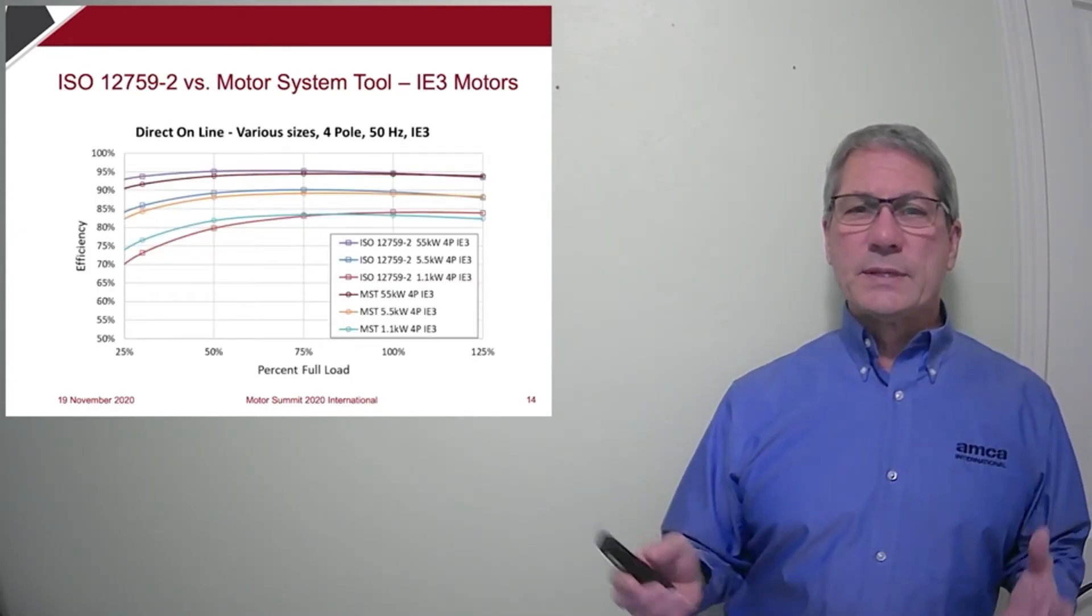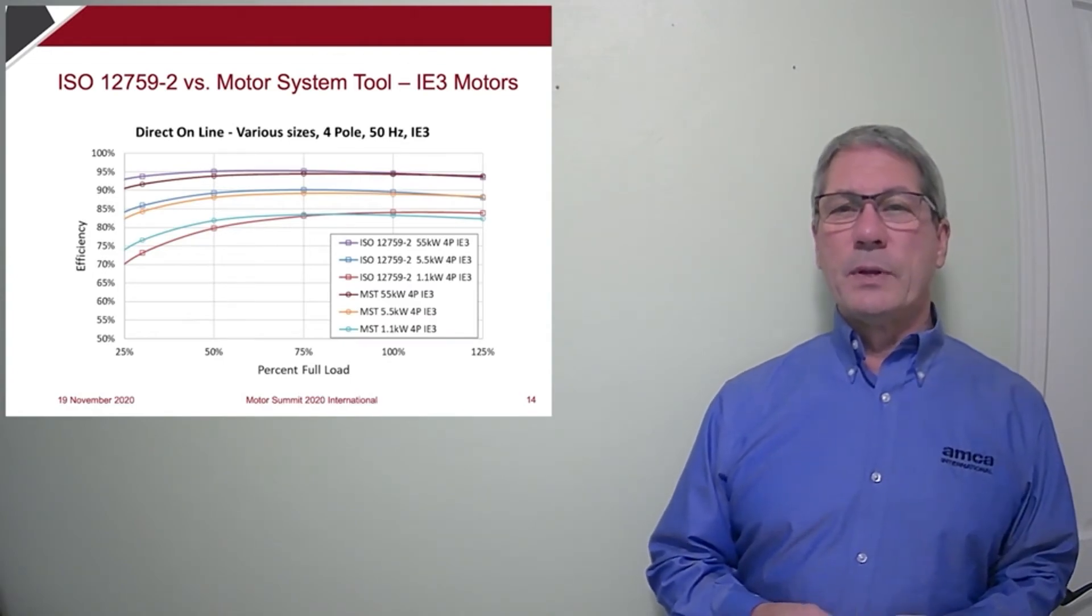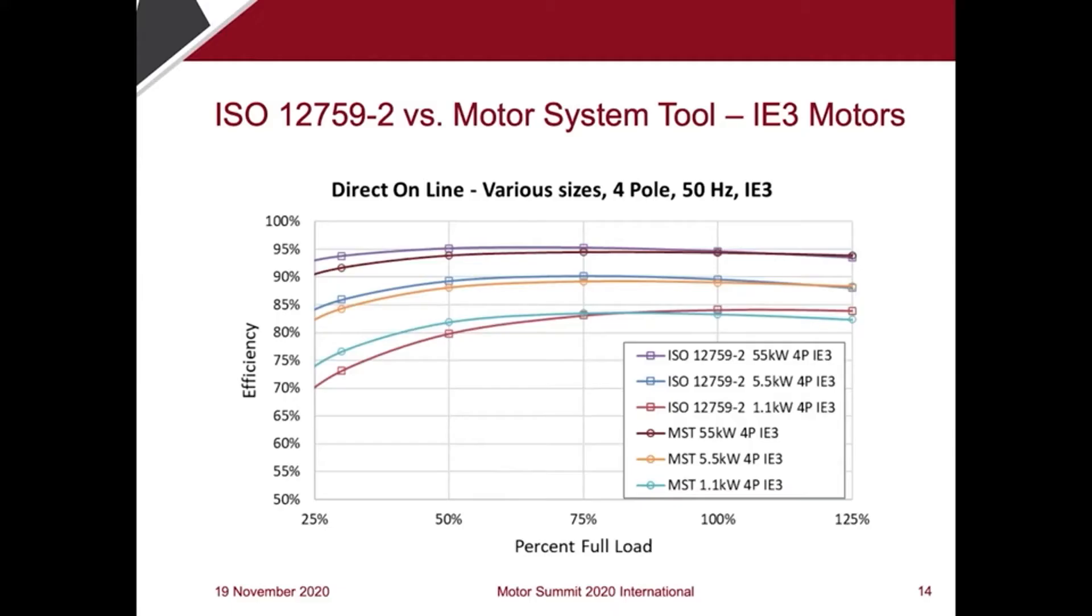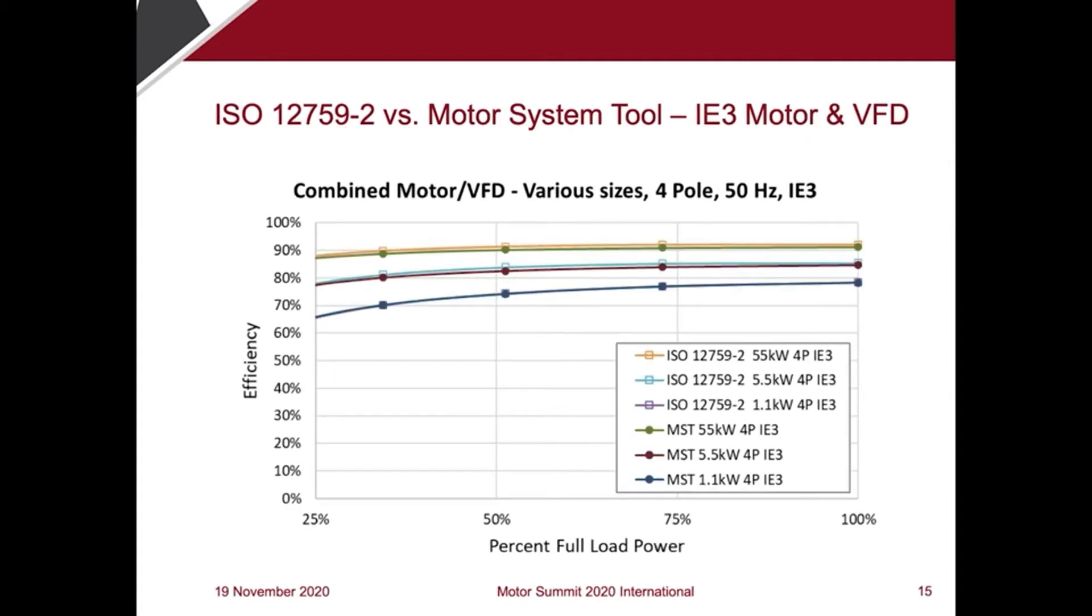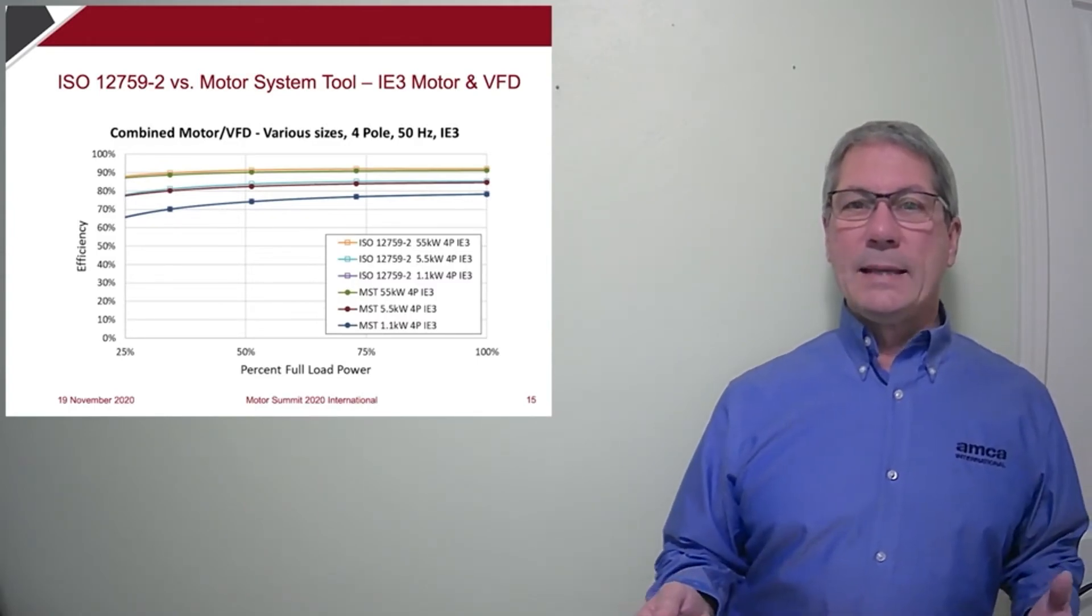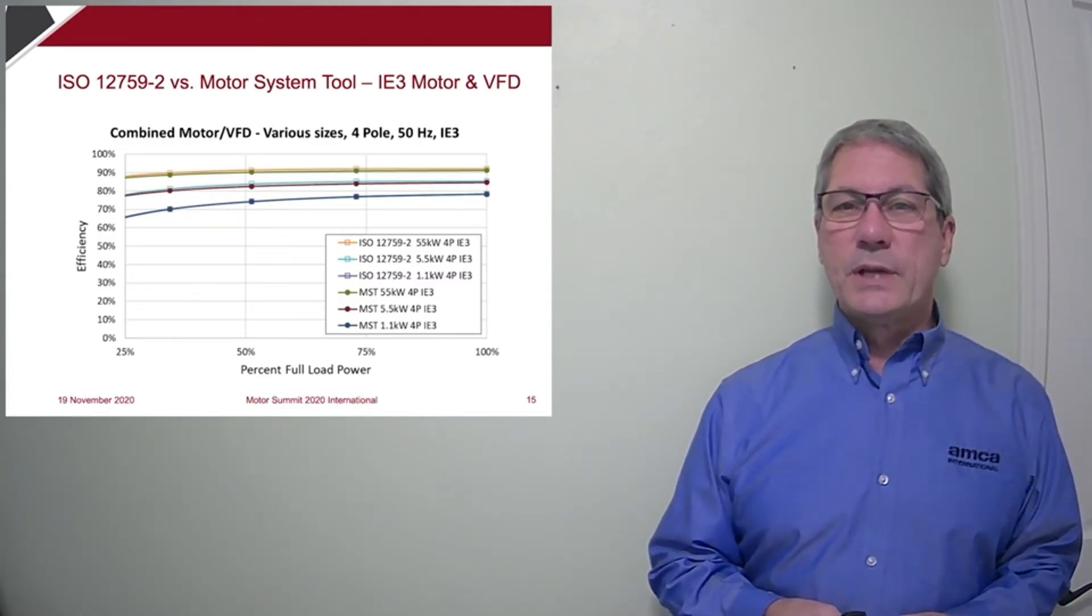So how did we do with this standard? Well, we have extremely close agreement with the efficiencies published by the Motor Systems Tool, a very useful tool put out by EEMSA. Here I have shown three different size IE3 motors with part load efficiency values, and you can see the correlation is excellent. And here's the comparison for IE3 motors combined with VFDs. Again, almost an exact match.